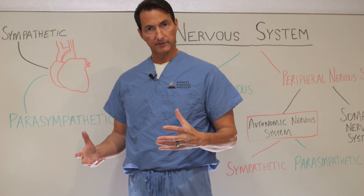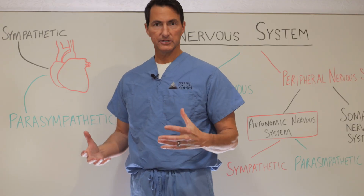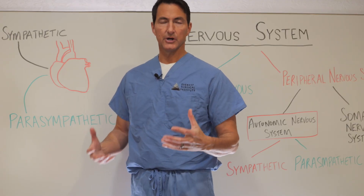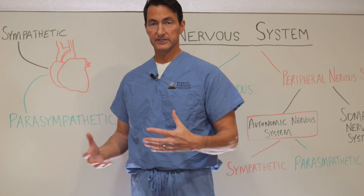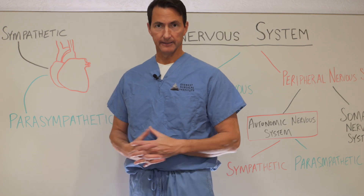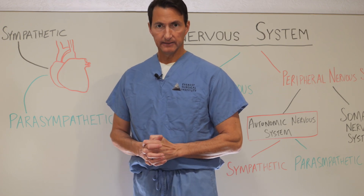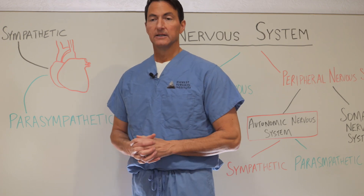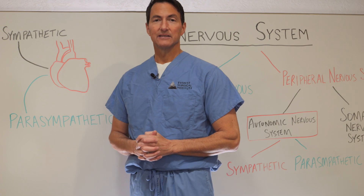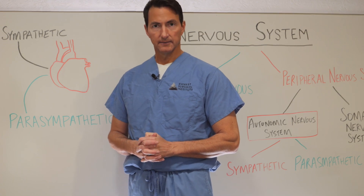To really understand the autonomic nervous system, we must understand something called heart rate variability, otherwise known as HRV. HRV, as the name suggests, is variability in the heart rate.